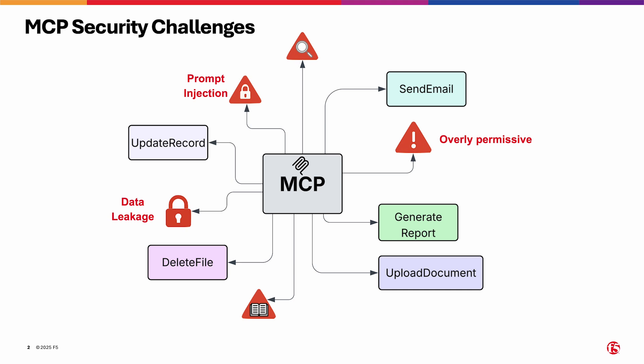Third, overly permissive AI triggering tools it shouldn't is like giving an unvetted user system-level power. Fourth, we need auditability and traceability — knowing what influences an AI's output is essential for trust and accountability. And fifth, there are governance and compliance gaps. Without clear control, AI can bypass enterprise rules.